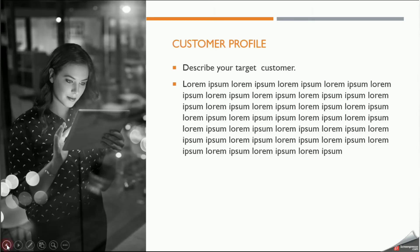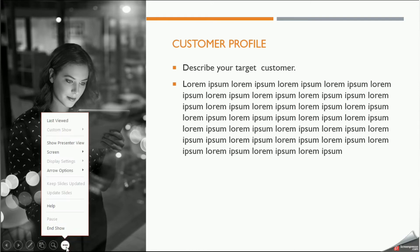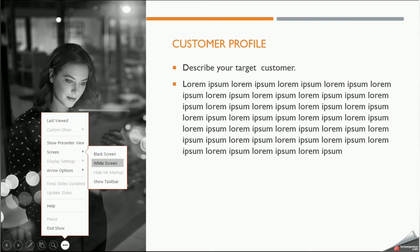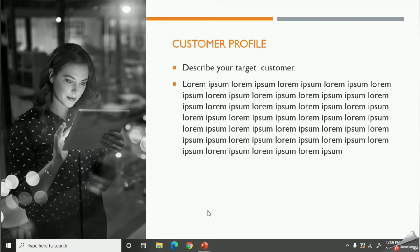Sometimes when you are conducting the presentation, you might want to move to another screen. You can use the three dots at the bottom of the document, then click on the screen option and select 'Show Taskbar.' Now you can access what you need — like your web browser, file explorer, or other applications.